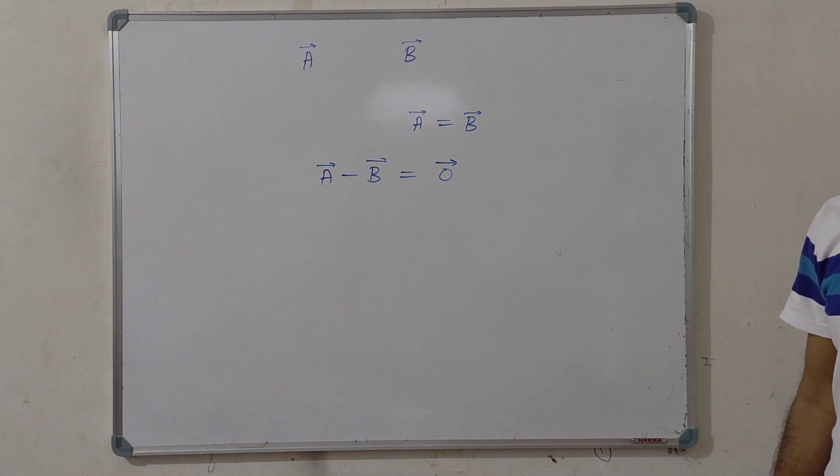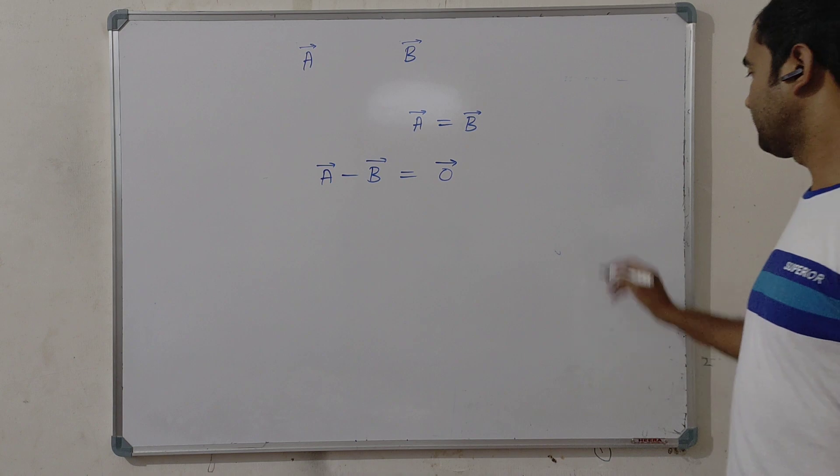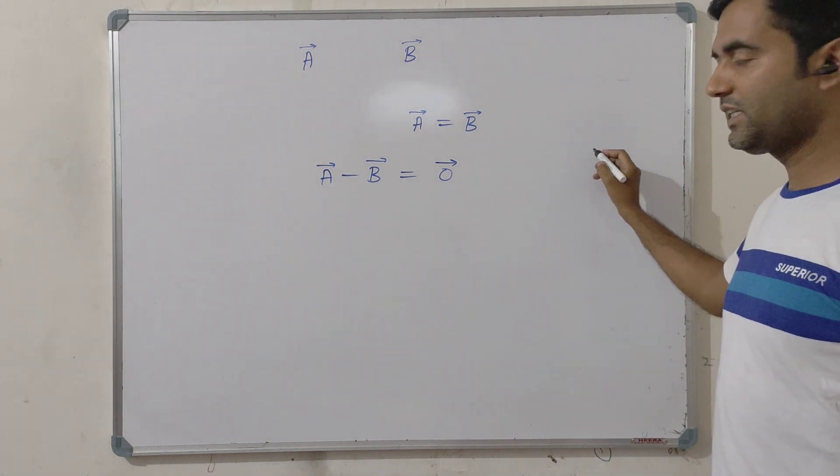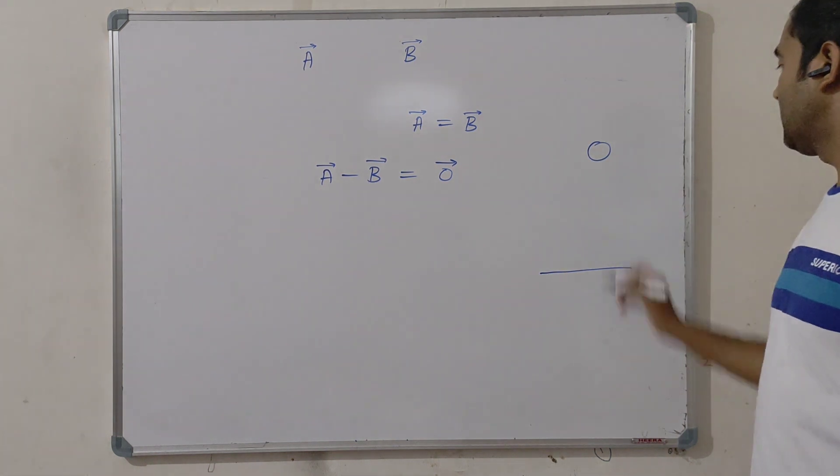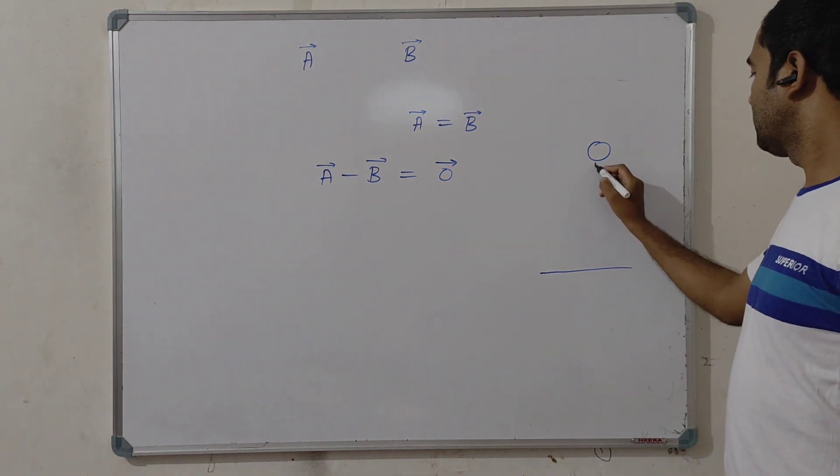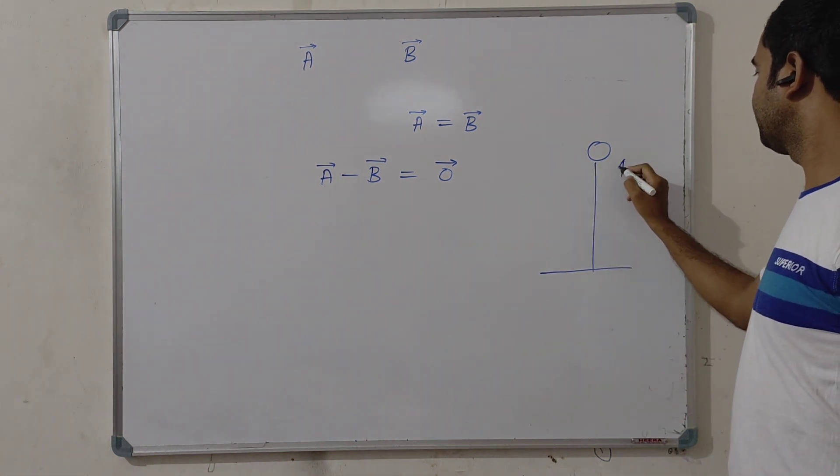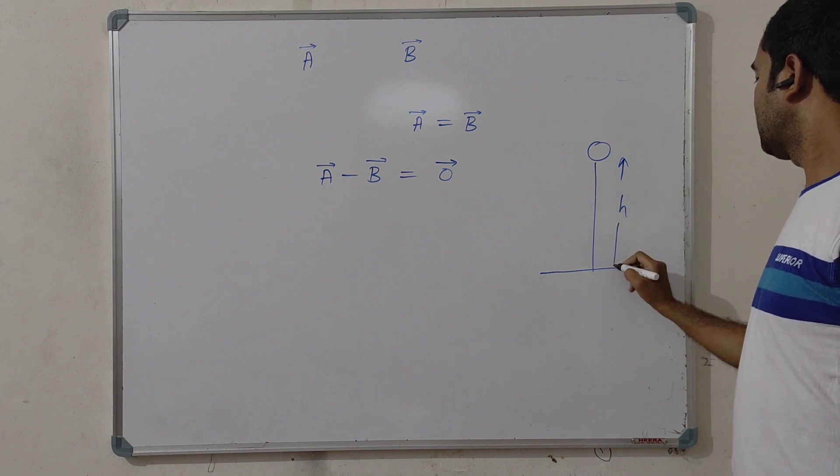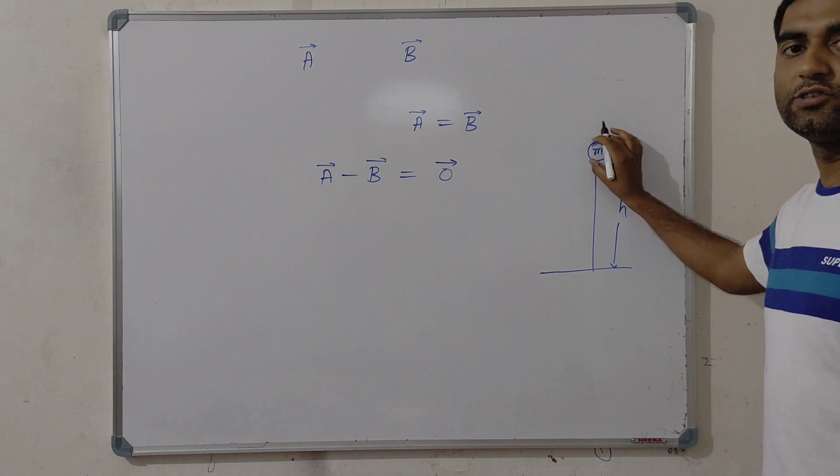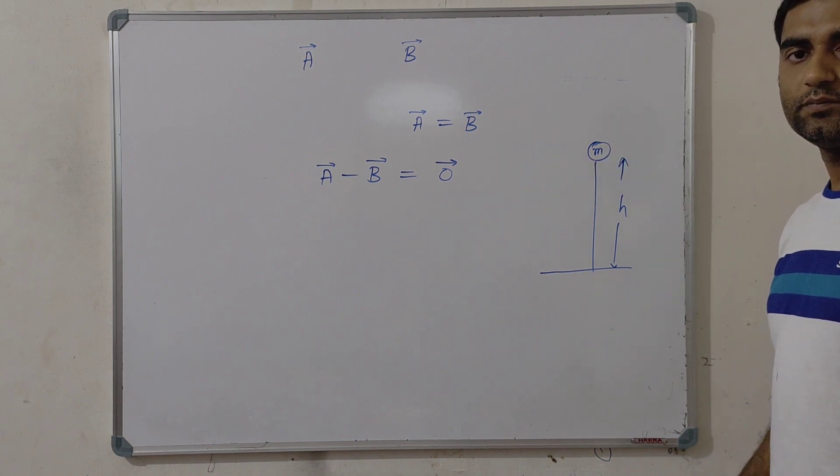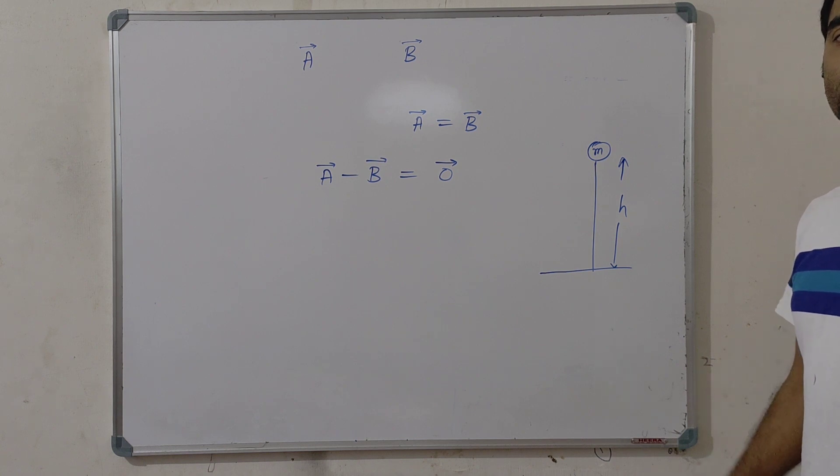Let us consider a particle is thrown in upward direction and the particle reaches to the topmost point. We are throwing this object from ground to a certain height H and this is the topmost point. That is, at this point, the object will have a velocity 0. We know, at the topmost point, the particle achieves a 0 velocity.